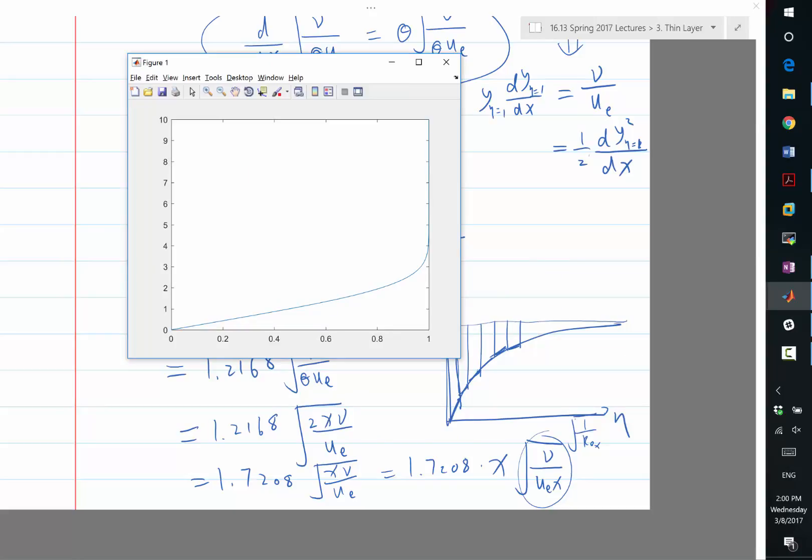So the 1.2168 is the beta, which is over here. So what this means is that if you take the whole block, if you look at the total area under this 1.2, the area is going to be the same as this area over here. So it's like the mass deficit thickness.